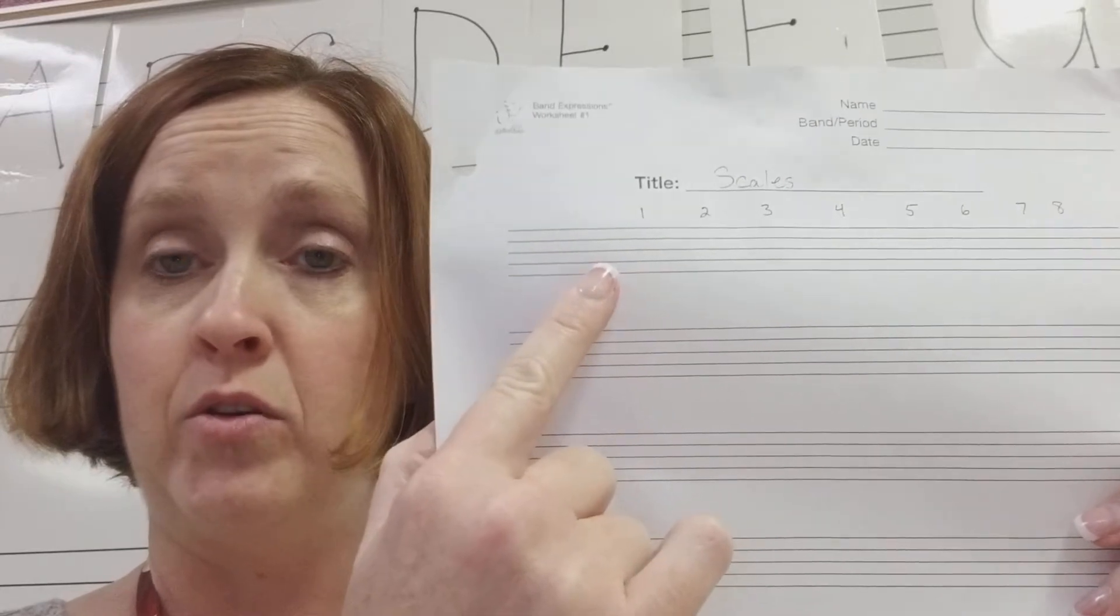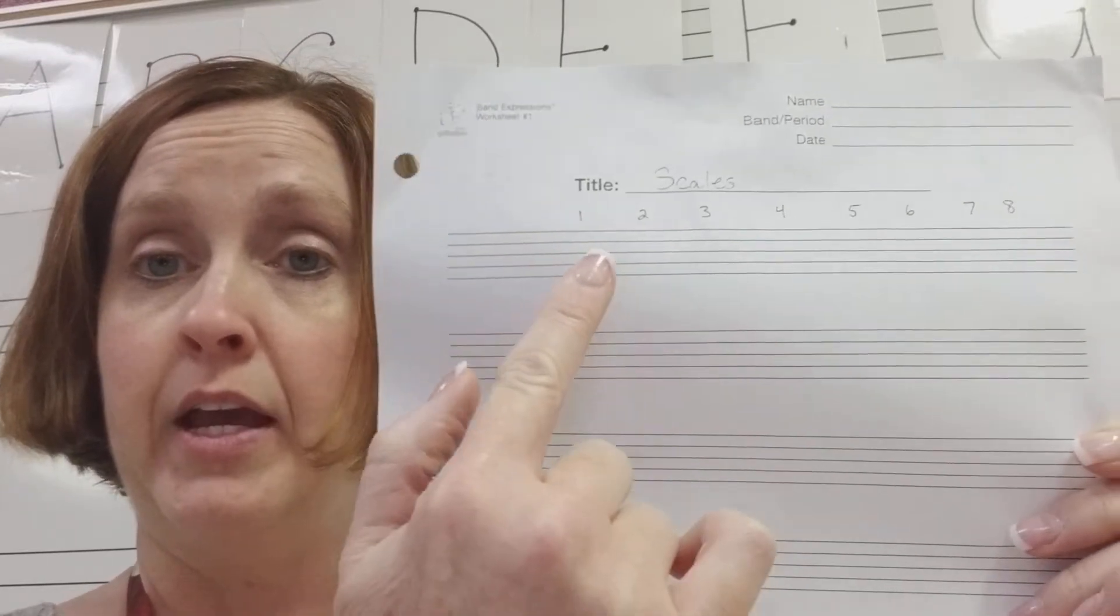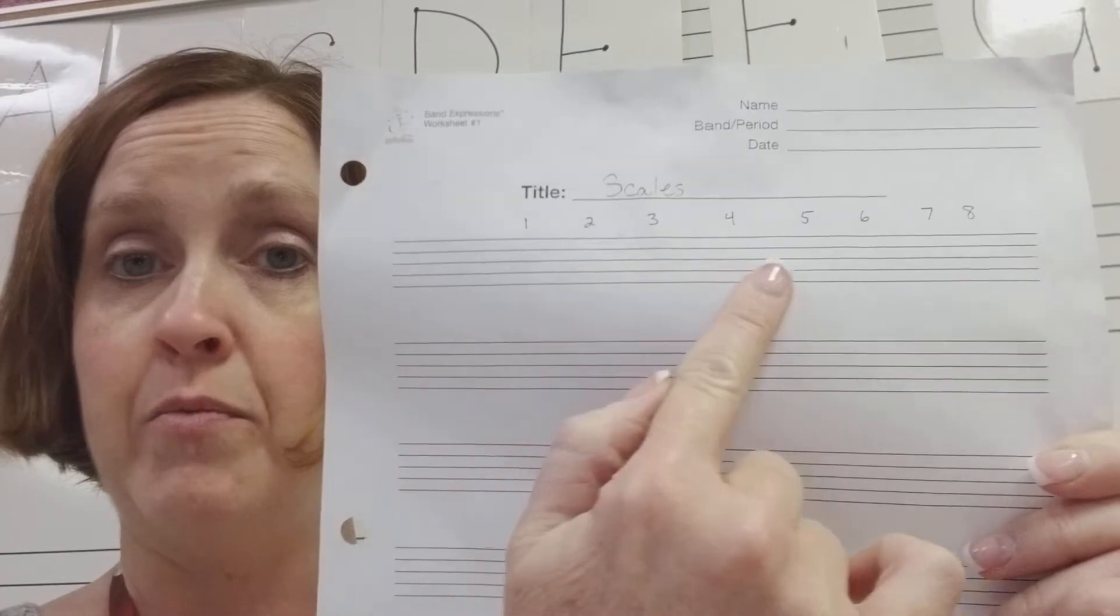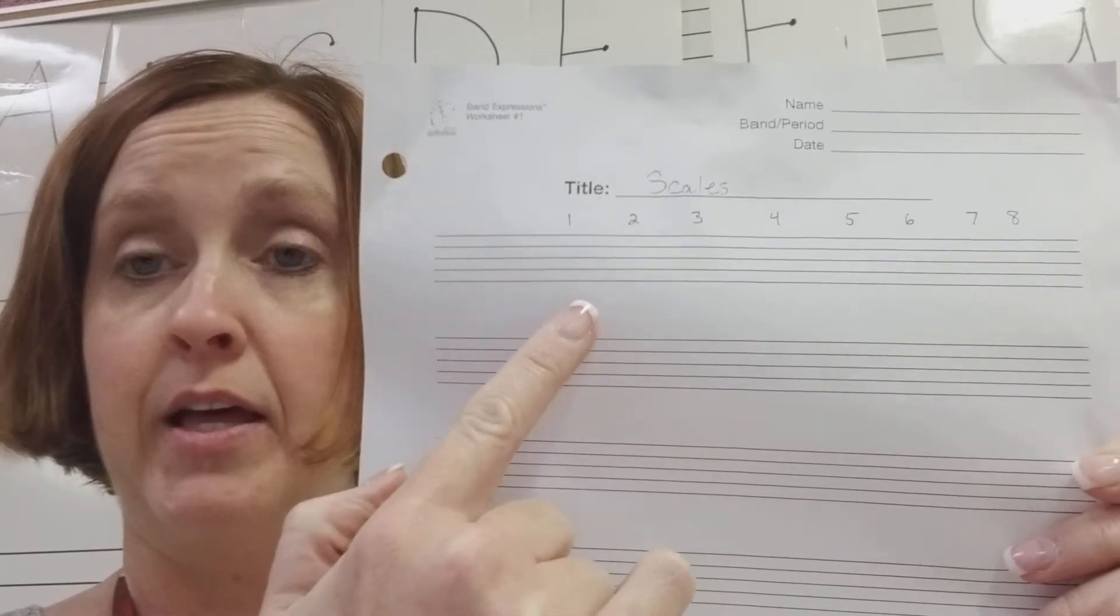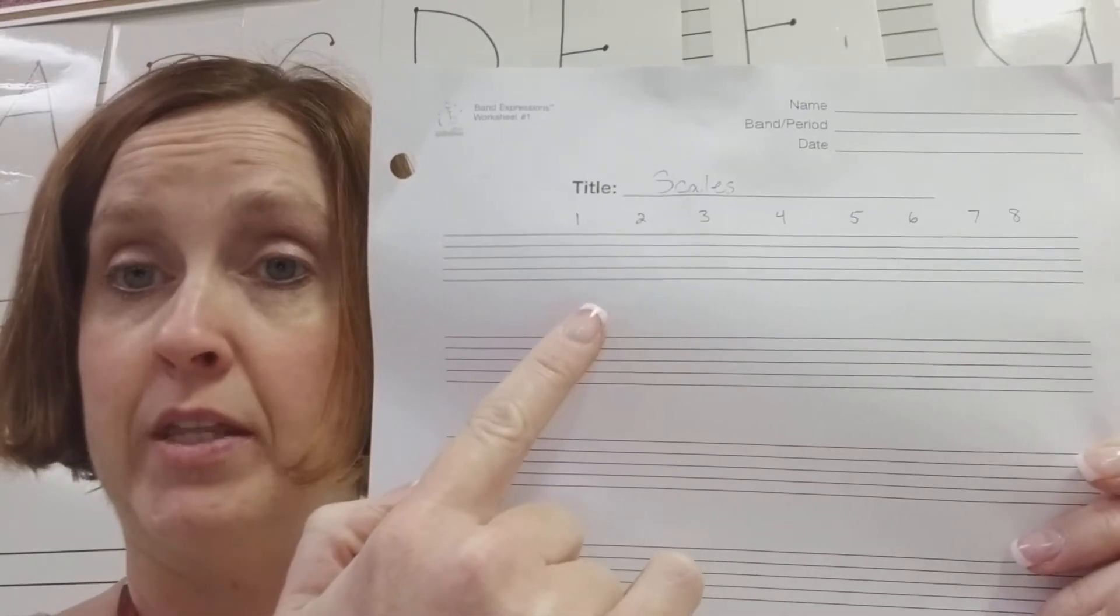Then we're going to add in our key signature. And then under each number at the top, one through eight, we're going to draw our scale using whole notes. And we're not going to skip any lines or spaces. And we're going to go forward in the alphabet.